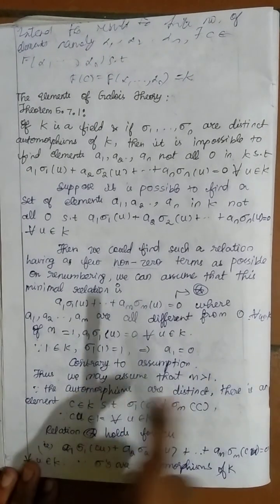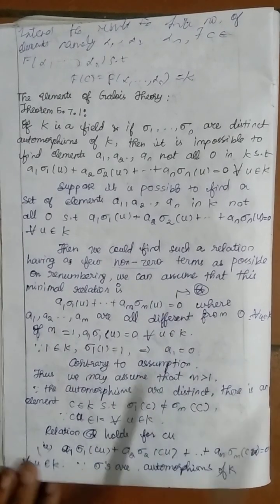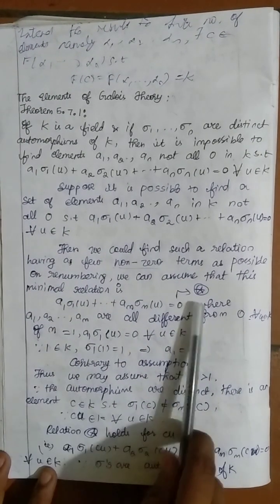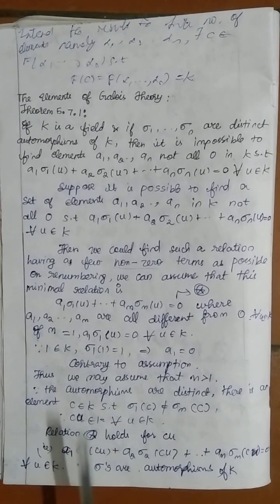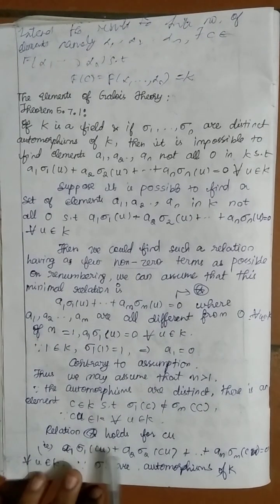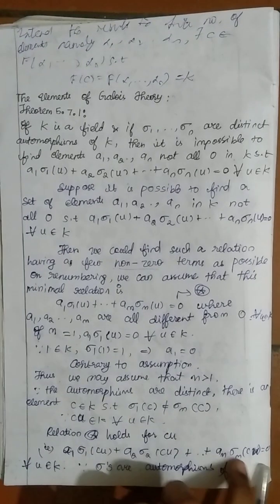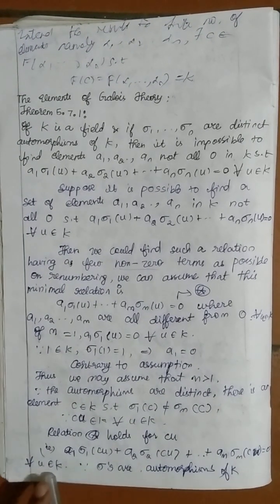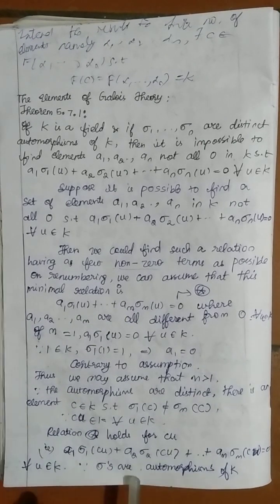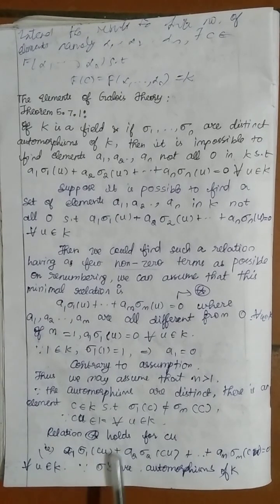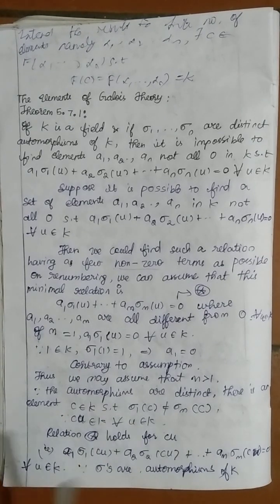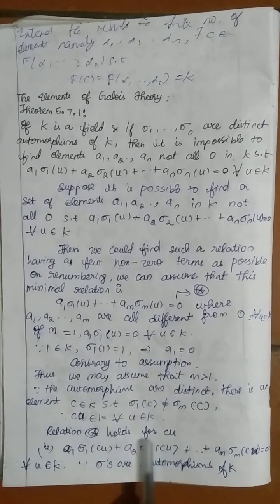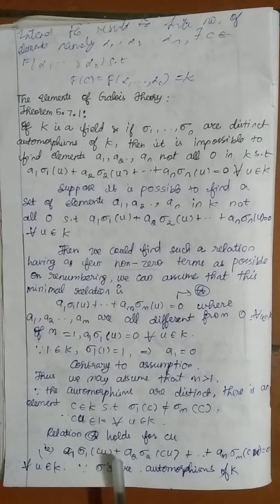The relation — call it star — holds for cu as well, because we assumed the relation is true for all u belonging to k, so it is also true for cu. Substituting cu in place of u gives: a1·sigma_1(cu) + a2·sigma_2(cu) + ... + am·sigma_m(cu) = 0 for all u belonging to k. Since the sigmas are automorphisms of k, we can separate: sigma_i(cu) = sigma_i(c)·sigma_i(u), using the multiplicative property of automorphisms.